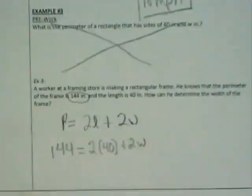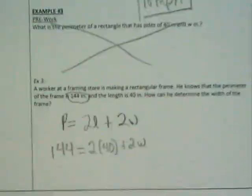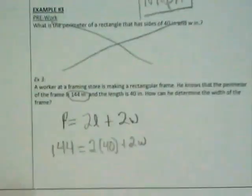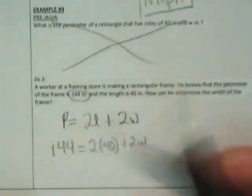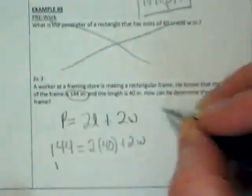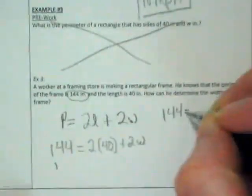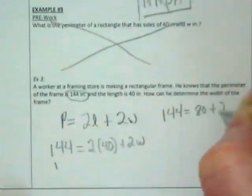If we solve this, what's the only variable left right now? Width. And so if we can just solve this, we're going to find out what the width is. What's my next action? Two times 40. I'm going to move it up here because I think I'm going to run out of room. 144 is equal to 80 plus 2W.